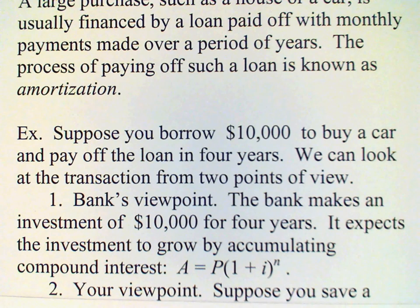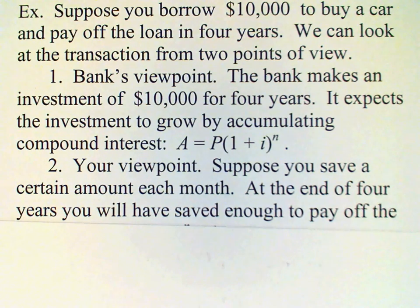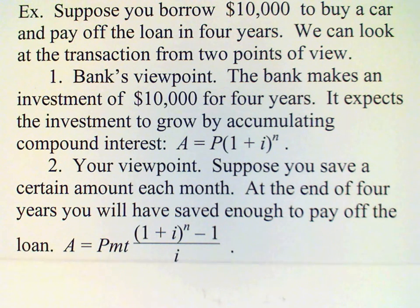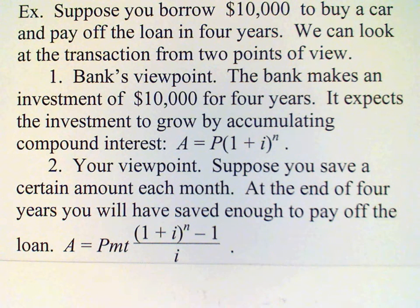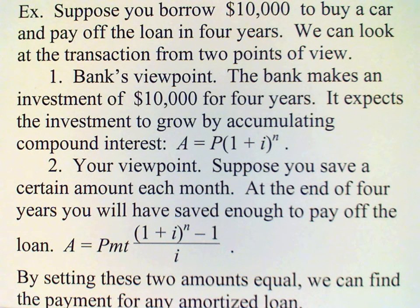Now from your viewpoint: suppose that you take the money that you're paying the bank and you put it in an interest-bearing account every month. Basically, what you have is an annuity. So at the end of four years, you would have had enough money to pay off the car. We recall that the annuity formula gives A equal to the annuity factor times the payment.